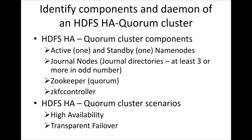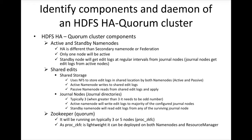HDFS HA provides high availability and transparent failover for your name node. You will have an active and a standby name node. We will not have a secondary name node if we configure high availability — the secondary name node will be dismantled. At any given point in time, only one node will be active and the other will be standby. We can swap the roles gracefully between the two nodes, making one active and the other standby.